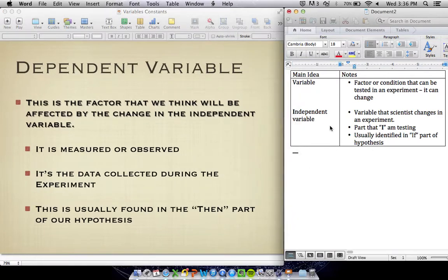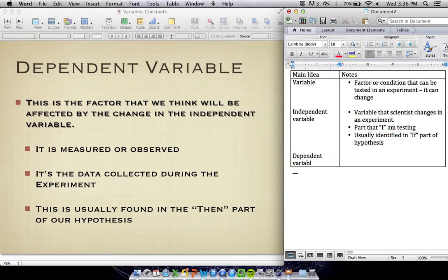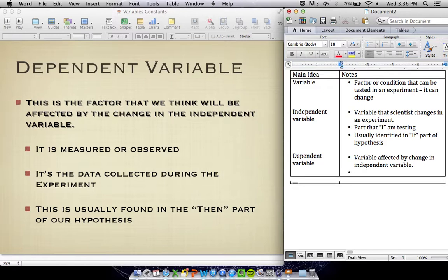Our dependent variable is our second type of variable. This variable is what we think will be affected by the independent variable. So this is a variable affected by a change in the independent variable.